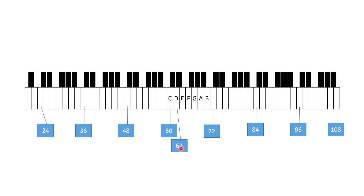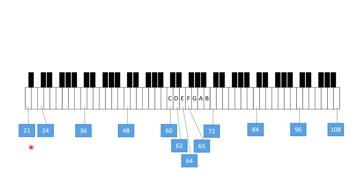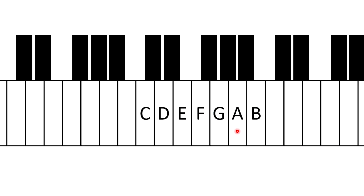Now let's look at the D key. The distance between C and D is two because there's a C sharp in between. So C is 60, C sharp is 61, D is 62. E is 62 plus 2 which is 64, and 63 is D sharp or E flat. F is 65 because E and F are next to each other. The lowest note on an 88-key piano is pitch 21 and the highest is 108. So 108 minus 21 plus 1 equals 88 keys.